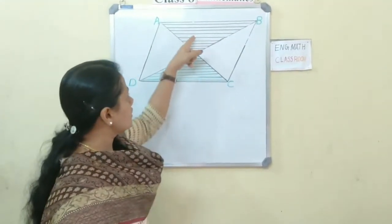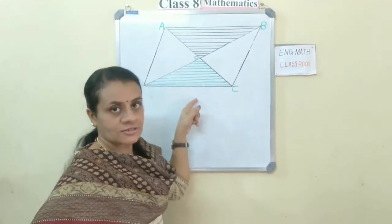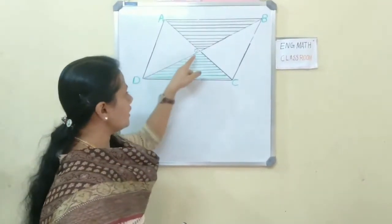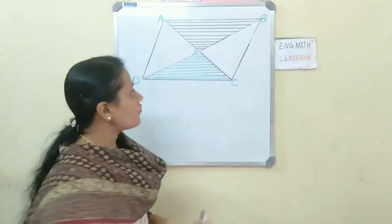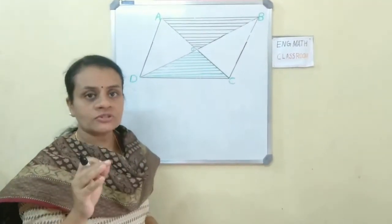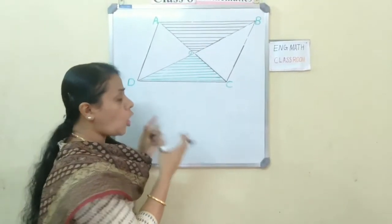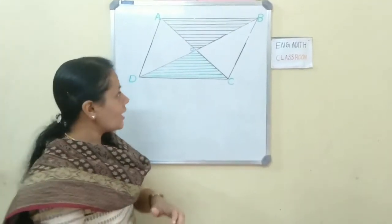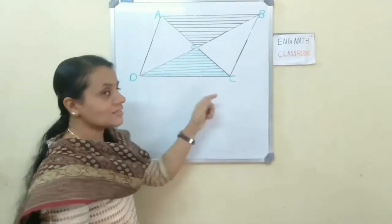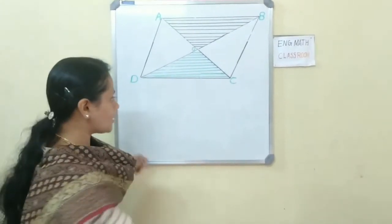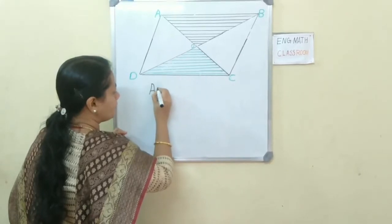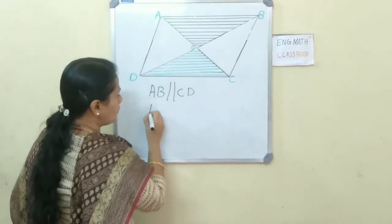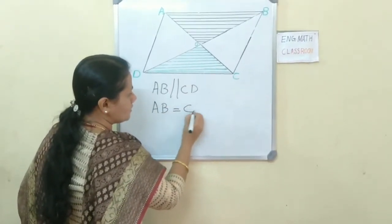I have taken these two triangles: triangle AOB and triangle DOC. From these two triangles, you have to tell me what are the common factors. Opposite sides are equal and parallel — AB and CD. So we write: AB parallel to CD, and also AB equals CD.